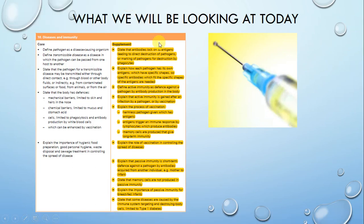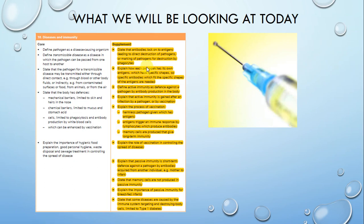Welcome to another episode of GCSE Biology Revision. Today we're continuing with the topic diseases and immunity, looking at the highlighted sections here. It's really important that you watch my previous video first, because the first two parts — antibodies locking on to antigens and each pathogen having its own specific antigens — have already been covered there. We'll be covering immunity, active immunity, passive immunity, and vaccination today.